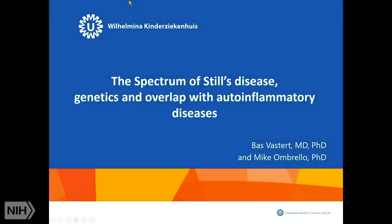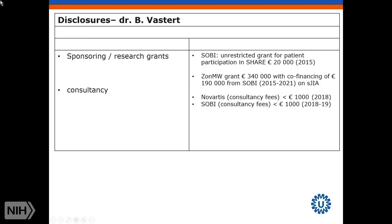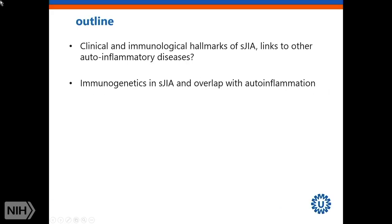Thank you so much for the opportunity to be here, and also to be in one shared talk with Michael Umbrella. These are my disclosures. In the next 15 to 20 minutes I will address the clinical and immunological hallmarks of systemic JIA, and how these are possibly linked to other auto-inflammatory diseases, whereas Michael Umbrella will discuss the immunogenetics.